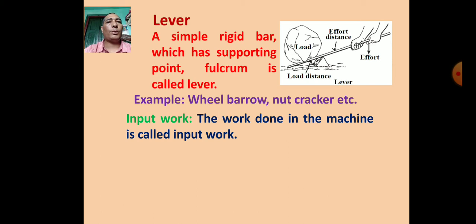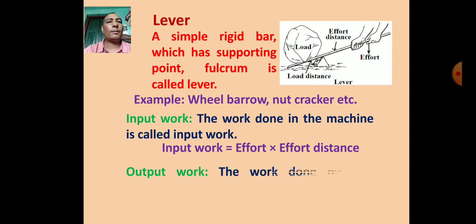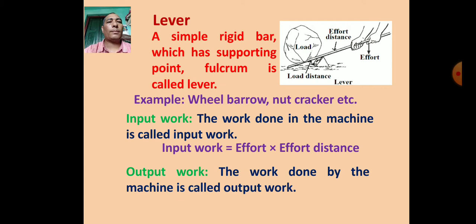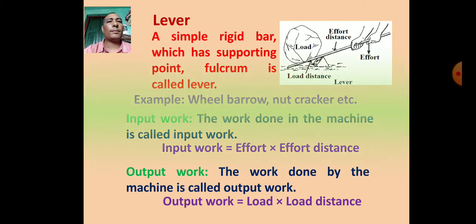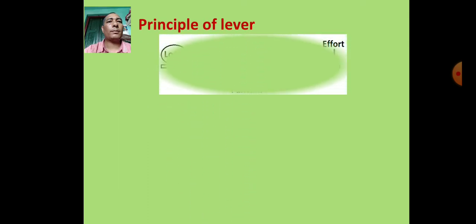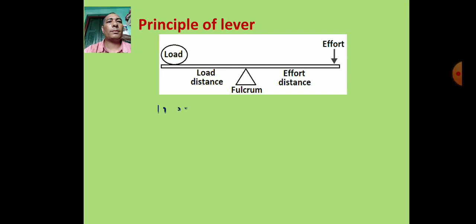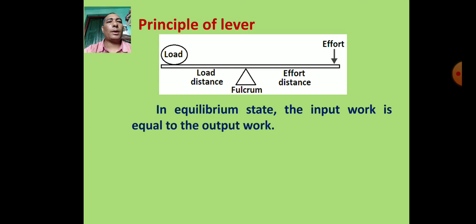Input work is the work done in the machine. Input work equals effort multiplied by effort distance. Output work is the work done by the machine. Output work equals load multiplied by load distance. Principle of lever: in equilibrium state, input work equals output work, so E × ED = L × LD.